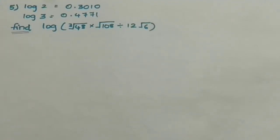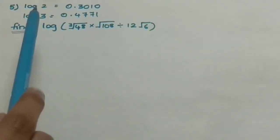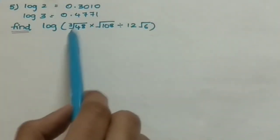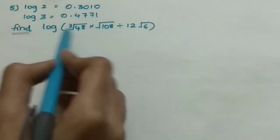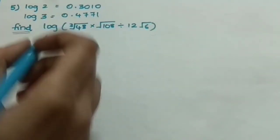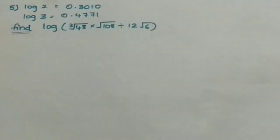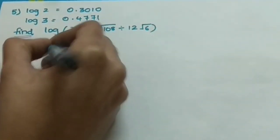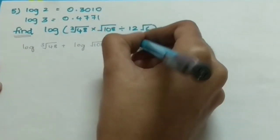In the fifth question, log 2 = 0.3010 and log 3 = 0.4771 are given. We have to find log of (cube root of 48 × square root of 108) divided by (12 × root 6). When we have log and multiplication, it becomes addition, and log with division becomes subtraction. So: log(cube root of 48) + log(square root of 108) − log(12 root 6).